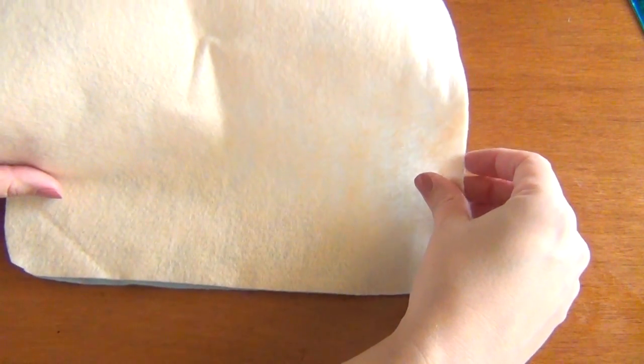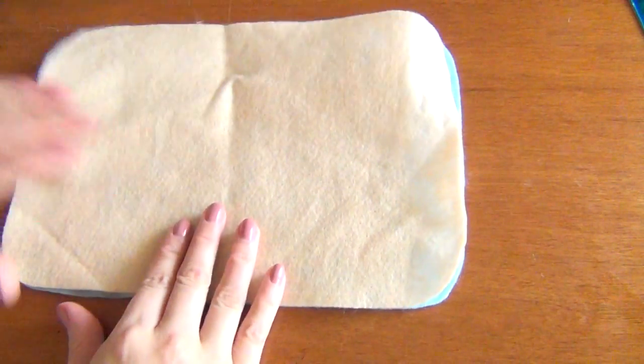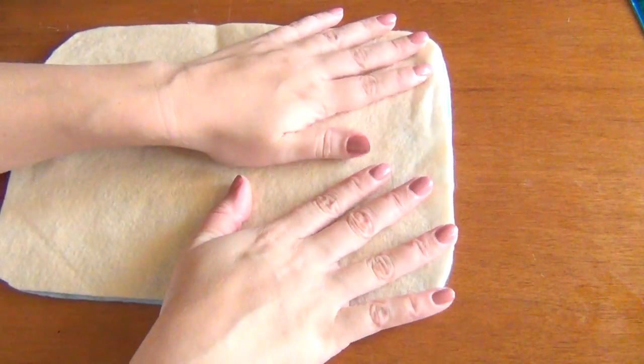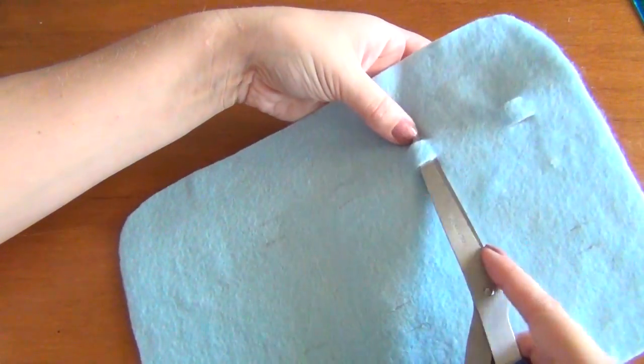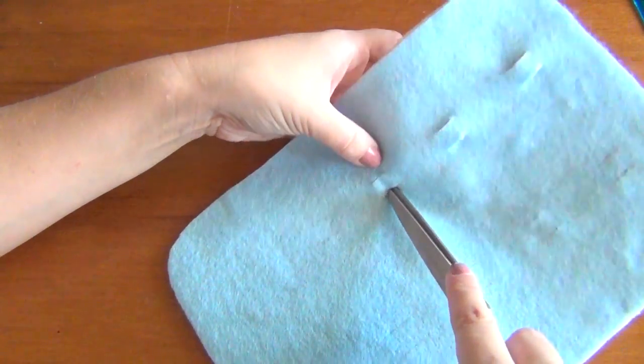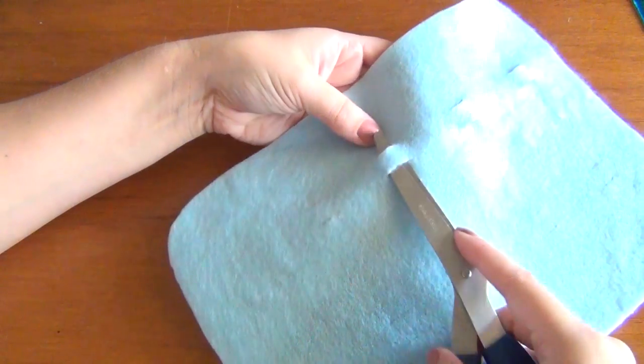So put a good amount of Fabri-Tac everywhere else then put your solid piece of felt on top of it and press it into place. And if you did this correctly there should not be any adhesive on the other side of your tabs so they should all just pop up.